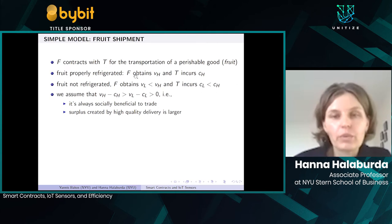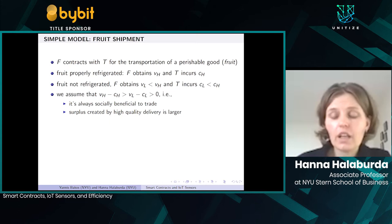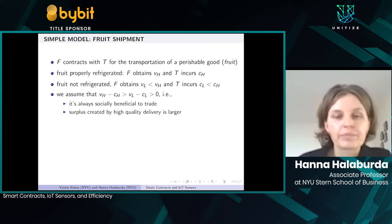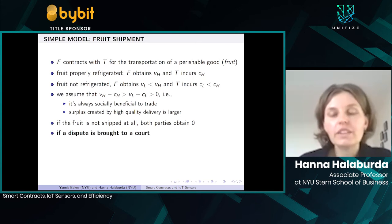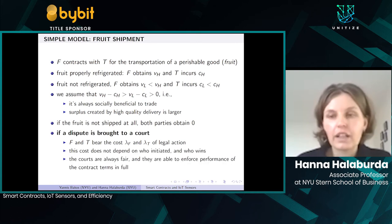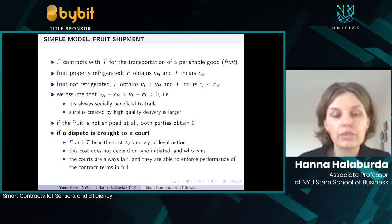Importantly, the fruit company does not see immediately upon delivery whether the fruit was refrigerated or not. It often turns out a couple of days later when fruit goes bad on shelves or must be sold at a discount. When fruit is not shipped, both parties obtain zero — this is the benchmark. An important element of our model is that if a dispute is brought to court, both parties bear a legal cost lambda. We simplify by assuming this cost is the same regardless of who initiates action or wins, and that courts are always fair and can fully enforce contract terms.